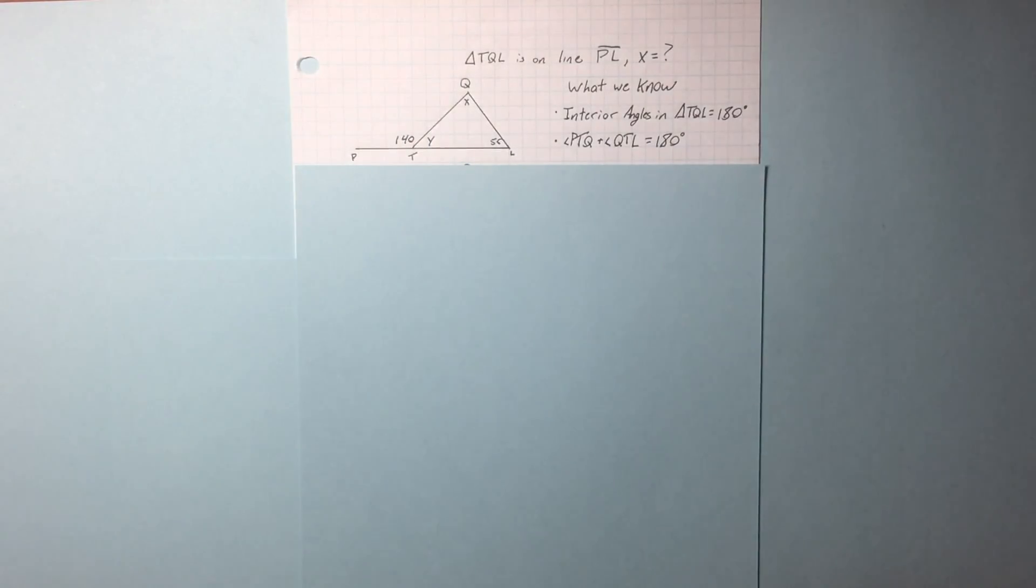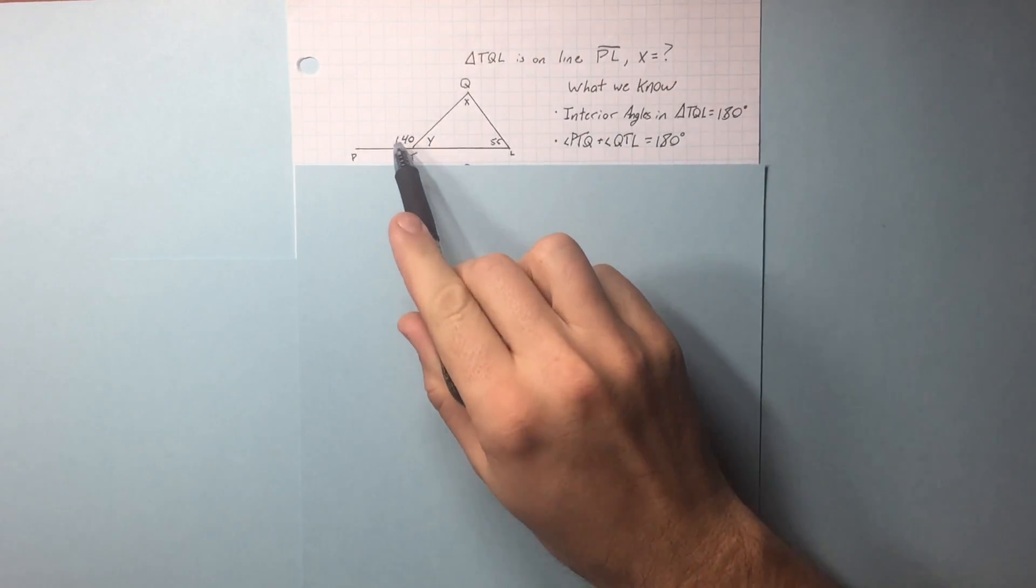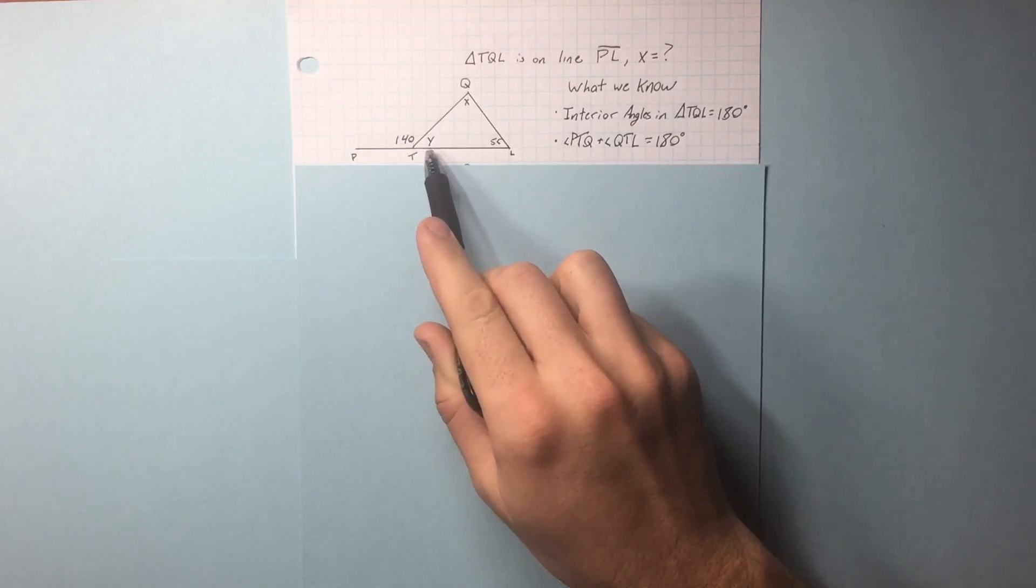We know that the inside angles of this triangle will add up to equal 180, and because these two angles are on a straight line, they're going to add up to equal 180.